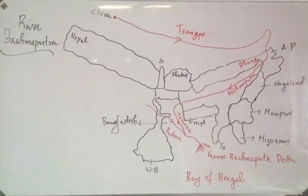When the river enters India through Arunachal Pradesh, the name changes. In Arunachal Pradesh, it is called Dihang. In Assam, it is called Brahmaputra. Its major tributary in Arunachal is the Dibang River. The river then flows through Bangladesh.